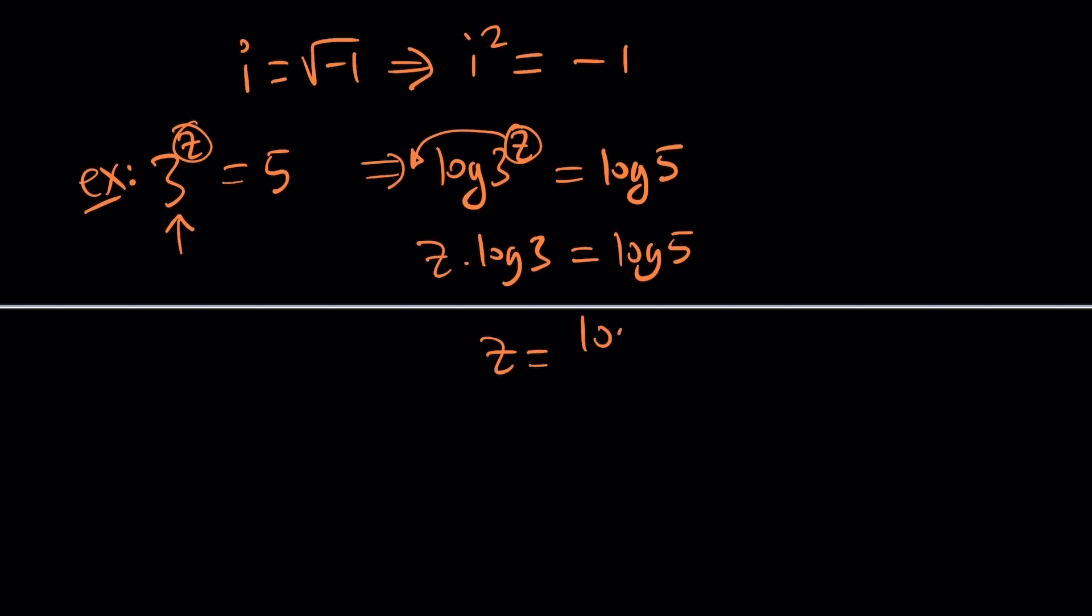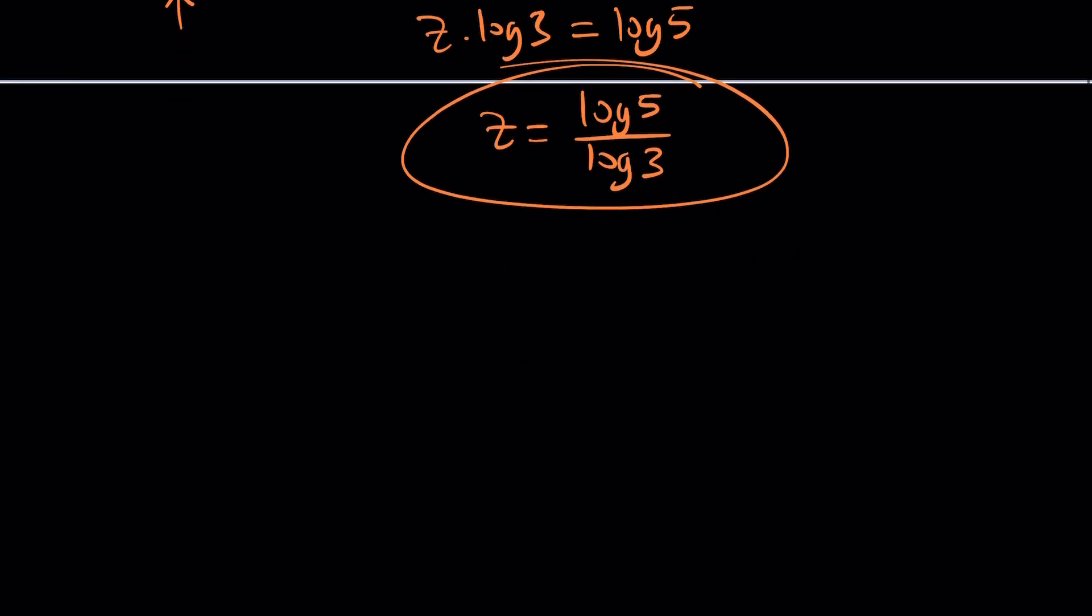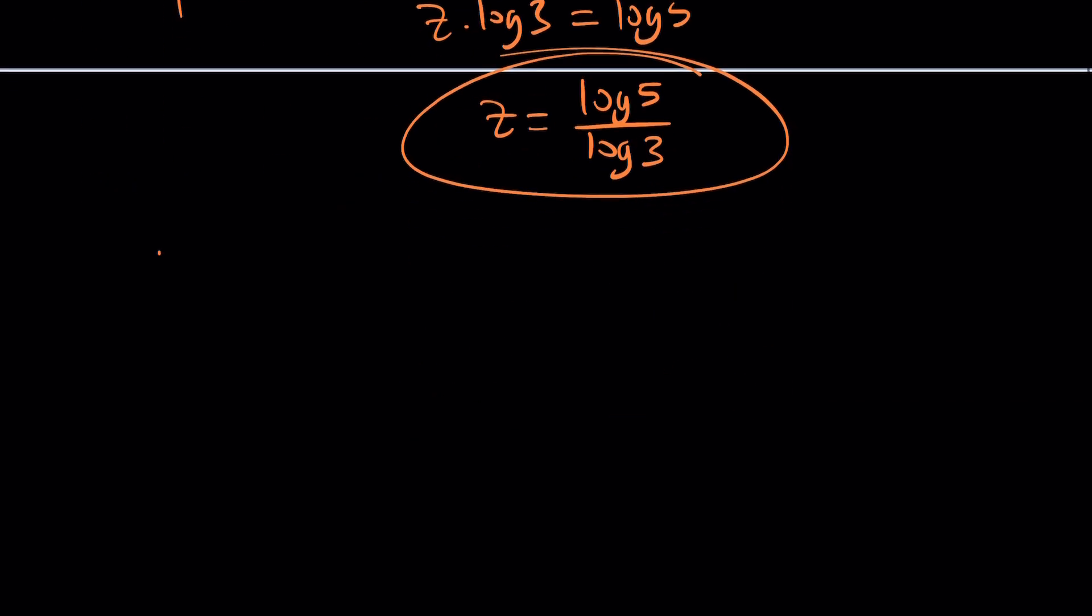And depending on which base you use, obviously, you would get different solutions or different looking solutions. They're all the same equivalent, by the way. But that would be the solution to this equation, right? So why not do the same thing? I mean, what is the difference between the real world and the complex world? So let's just copy that method. And we have i to the z equals e. The only difference is i is imaginary. But let's just still do it.